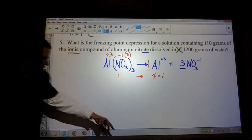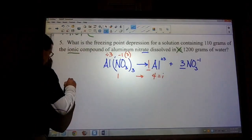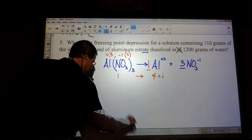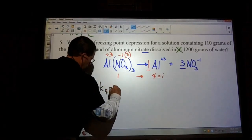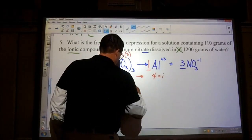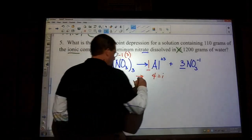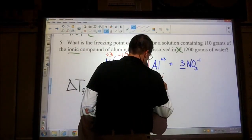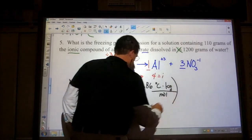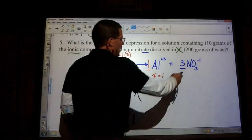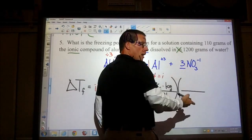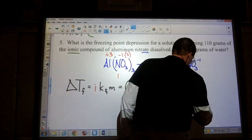So we can look at our equation. We're doing freezing point. So delta T sub F is equal to our multiplier i, K sub F, times molality. So plug that in. We have four as our value. We have our K sub F, which is our constant, so 1.86 degrees kilogram per mole. And now we need to find the molality. So the easy part of the molality is the kilograms of water. So divide the 1200 by 1000, that gives you 1.2 kilograms.